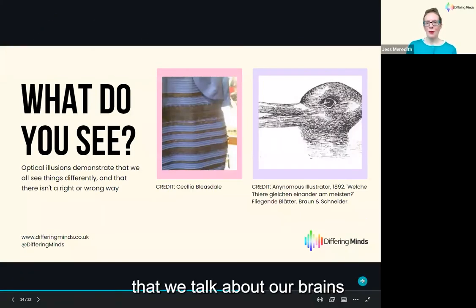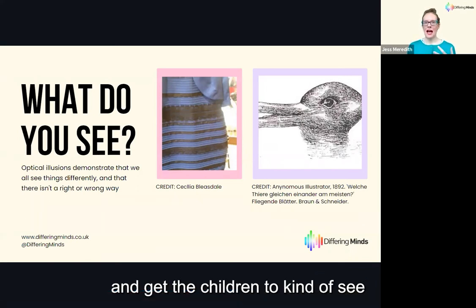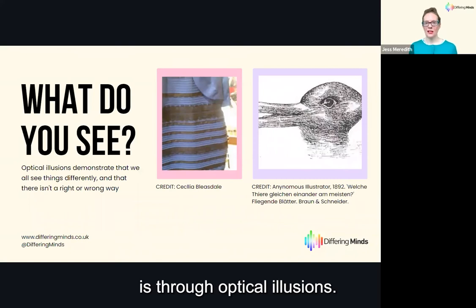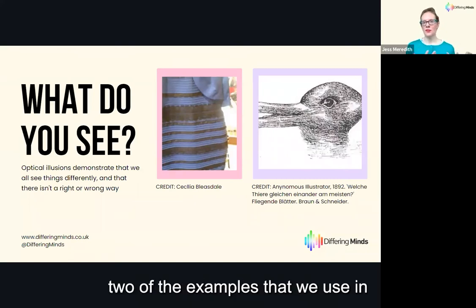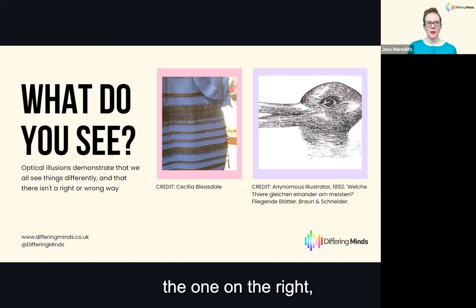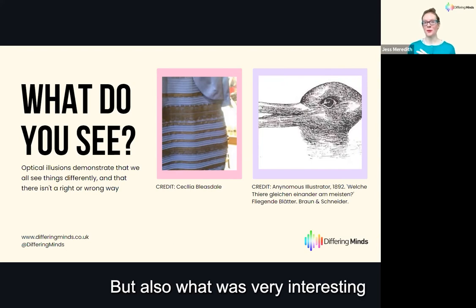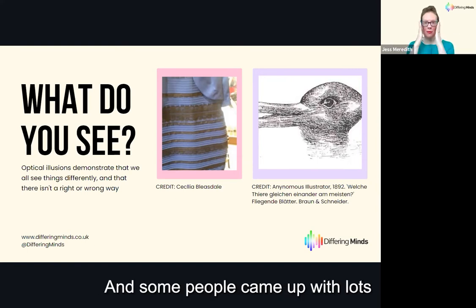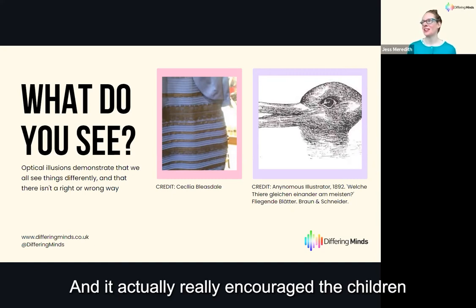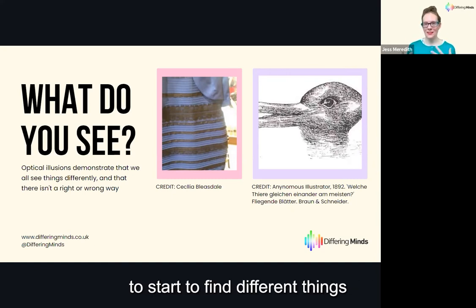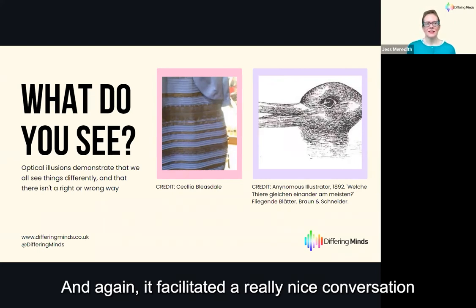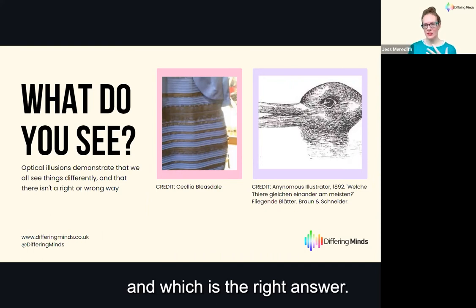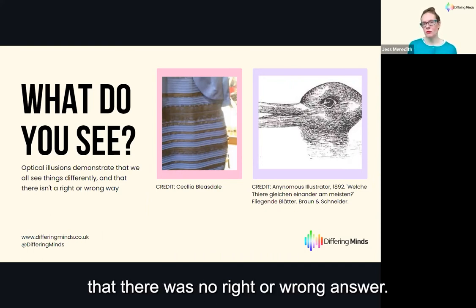Another way we talk about the difference in our brains is through optical illusions. We use two examples in the lesson. The one on the right — the rabbit-duck image — generated varied responses: some children said rabbit, some said duck, some could see both, and some came up with entirely different things. It really encouraged children to find different interpretations and facilitated a great conversation about who's right — and the realisation that there was no right or wrong answer.